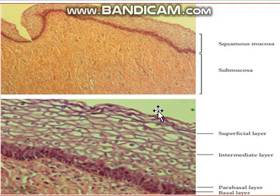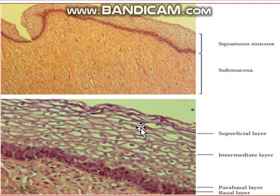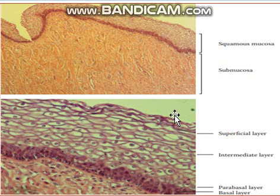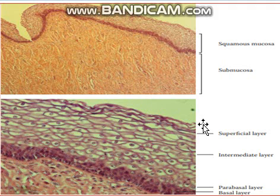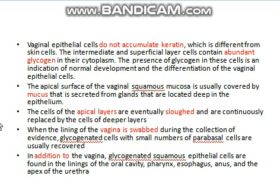Even at the time of collection of vaginal samples, the layer collected in the swab is the superficial layer. There are chances to get parabasal layer cells as well, but they are usually very few. The major amount of the sample collected in a vaginal swab is generally composed of the superficial layer. Moreover, since they are loosened up, some cells are already present in the vaginal fluid.